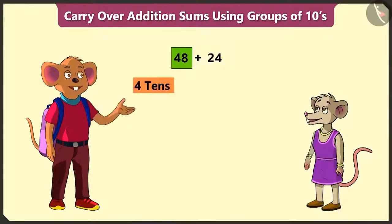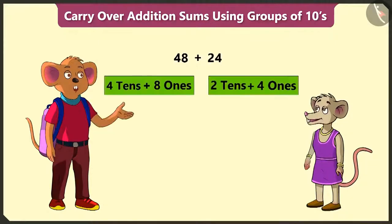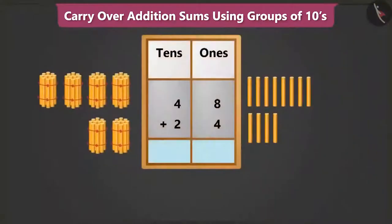48, that is 4 tens and 8 ones. Similarly, 24 means 2 tens and 4 ones. Now, to add both these numbers, we have to place them in the tens and ones boxes.